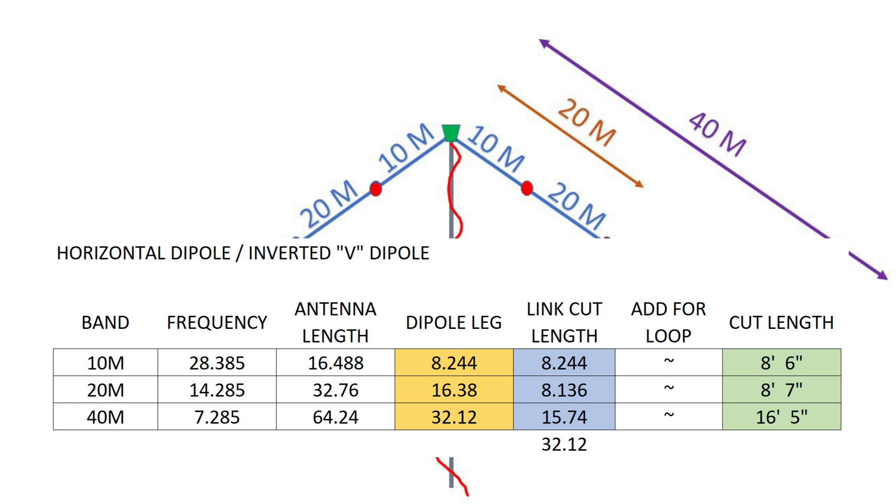For your second length or for your 20 meter section, you need a dipole that's 32 feet 7.6 or each side. On the left side would be 16.38, the right side 16.38. We already have 8.24 from your 10 meter section. So you need to subtract 8.24 from 16.38 and you get 8.136. So it's the addition of these two that gets you your 16.38. So I'm cutting this second section 8.7.